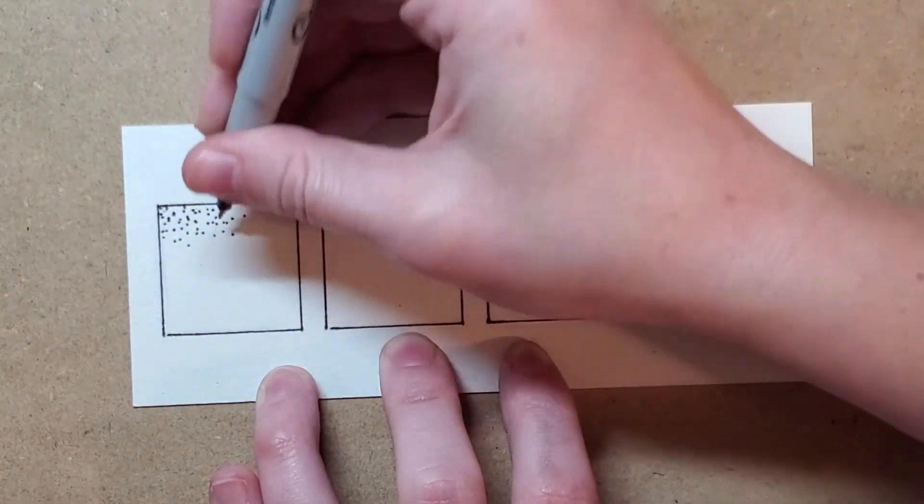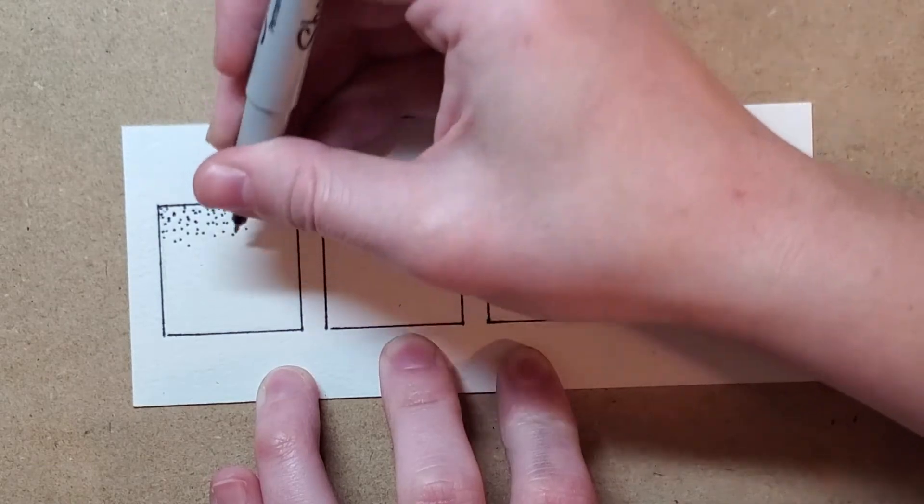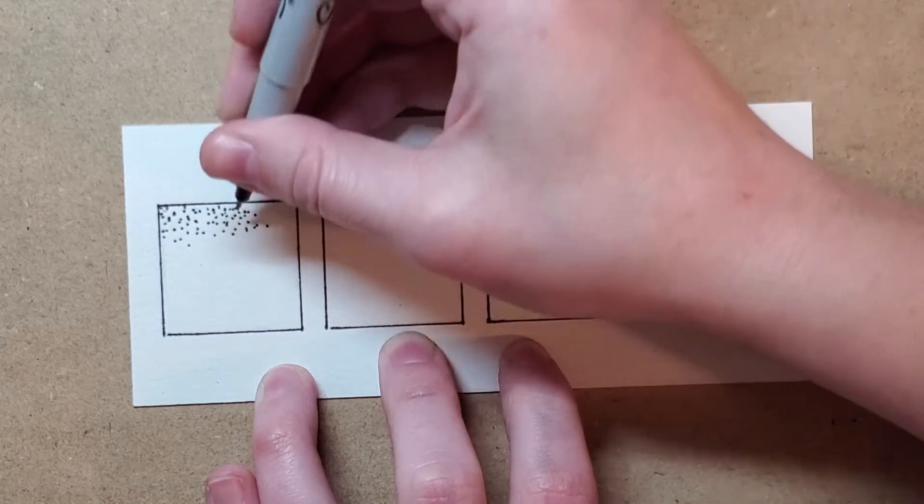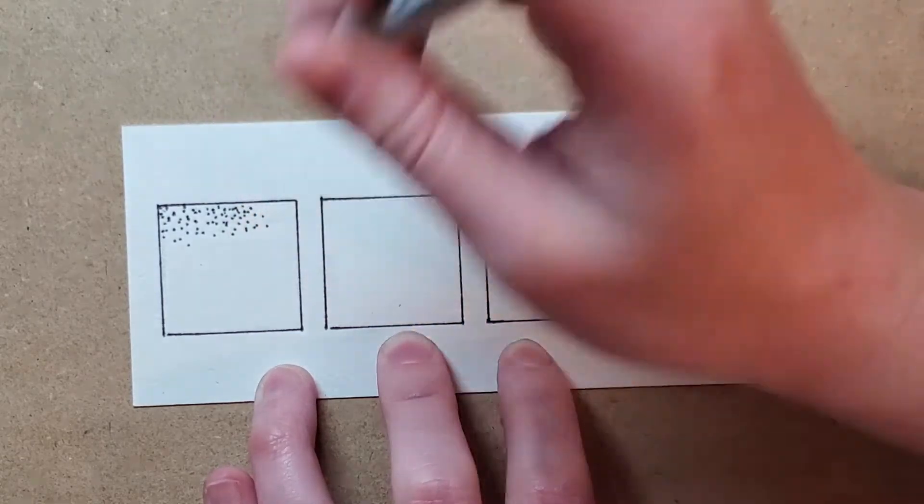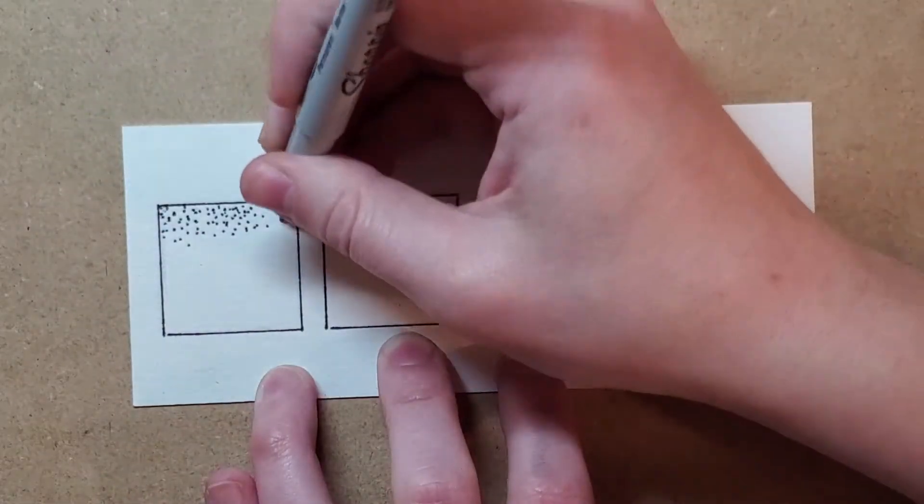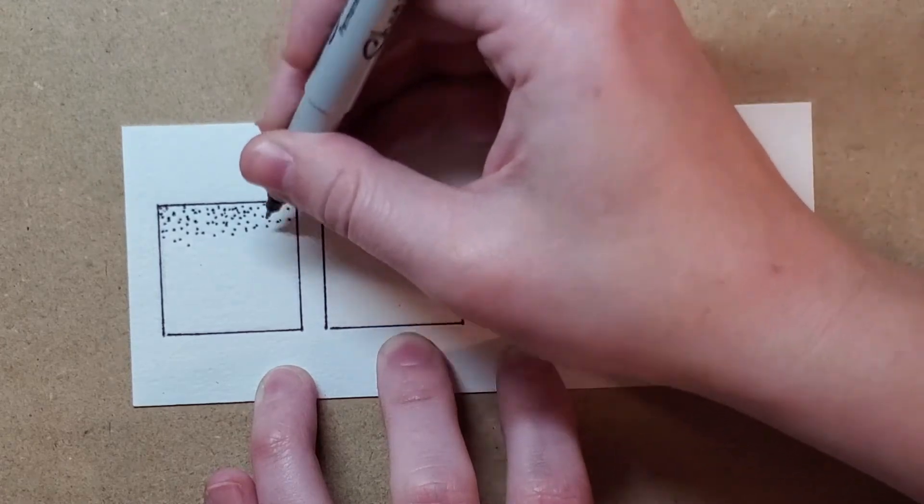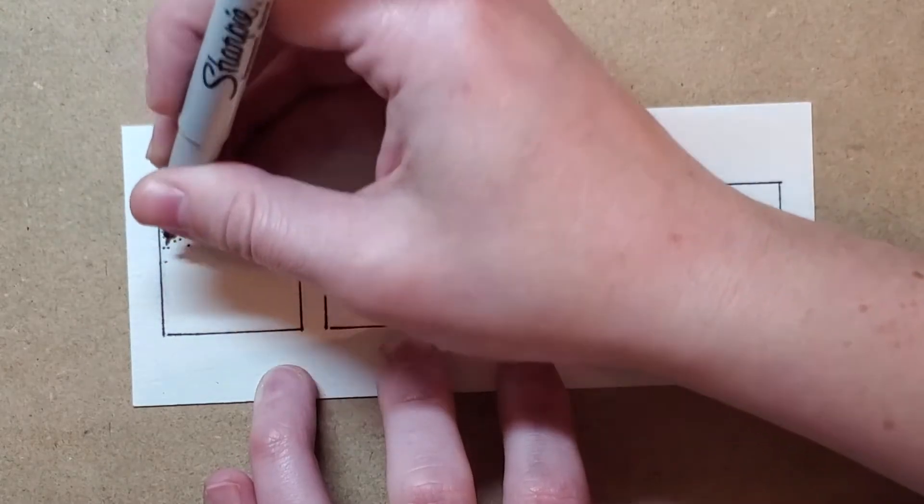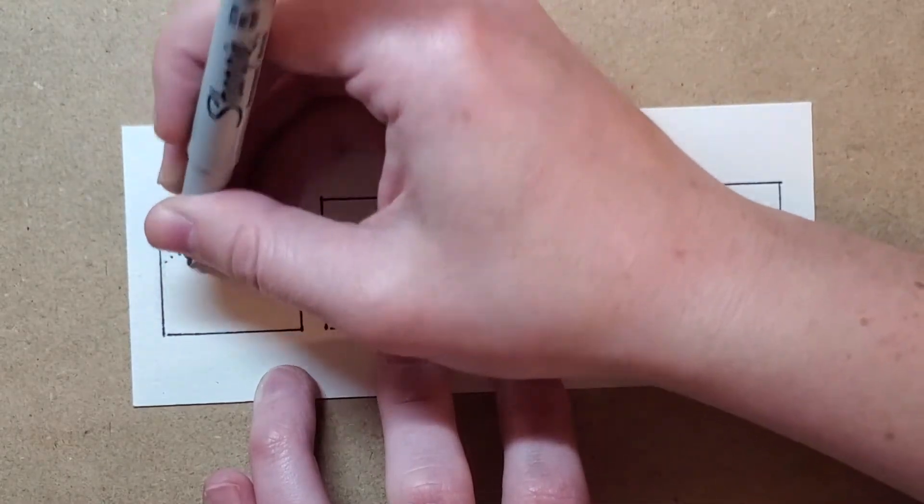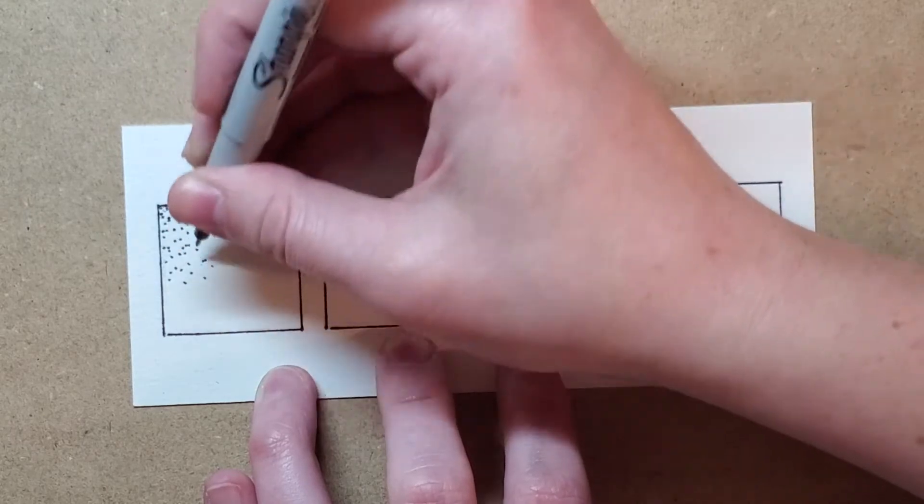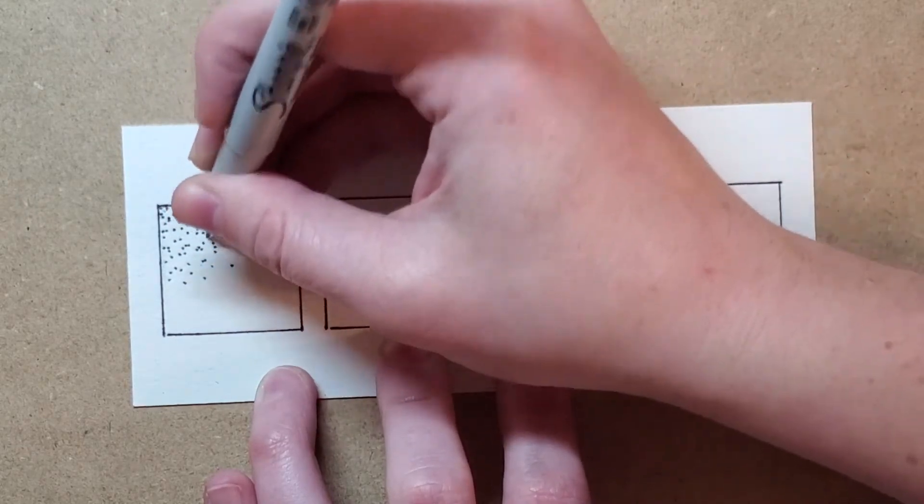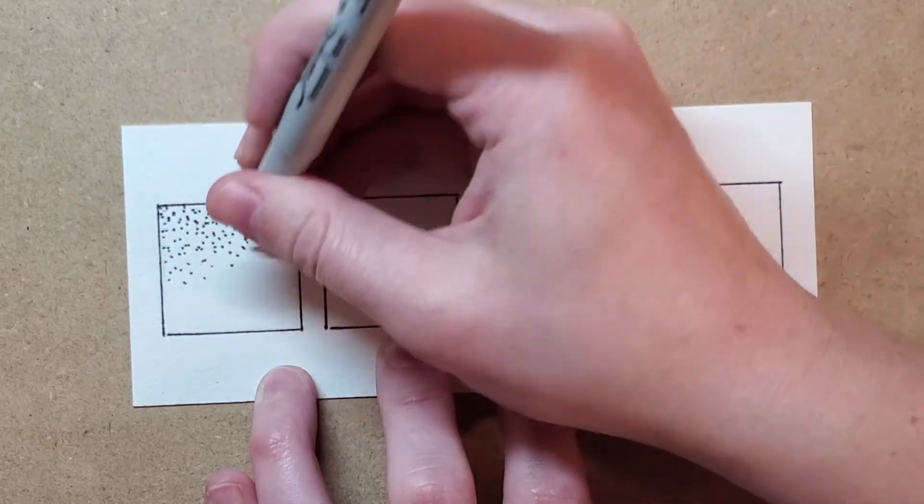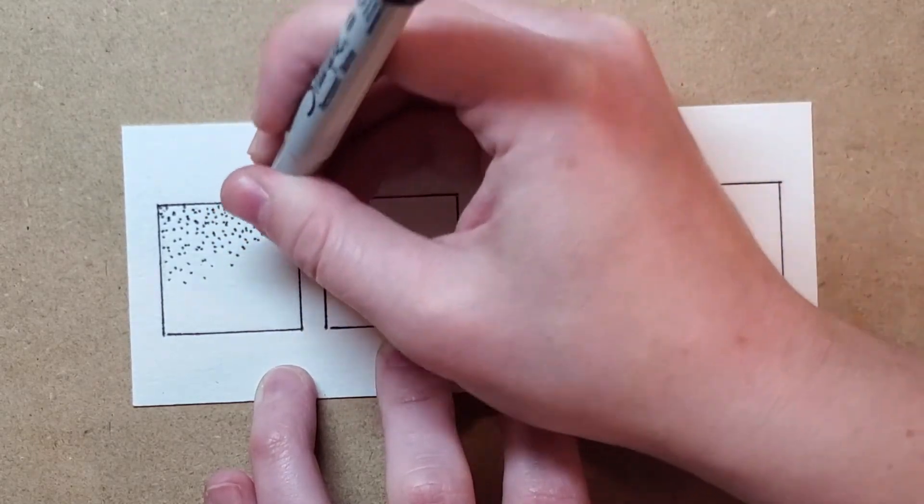And the positive of using this mark making technique is it has a lot of control behind it. You don't necessarily go out of control with too many dots and go outside the lines. You're less likely to make messy decisions. The downside of using stippling is it takes a very long time. So if I want to do stippling, the more dots closer together I do, the darker the value is.